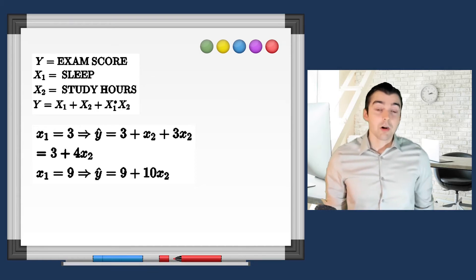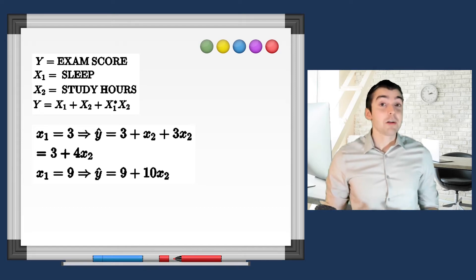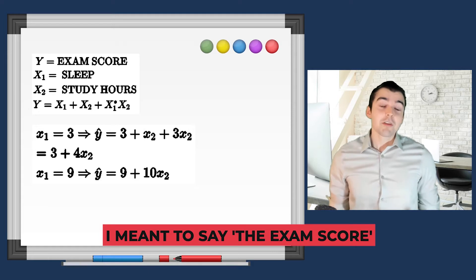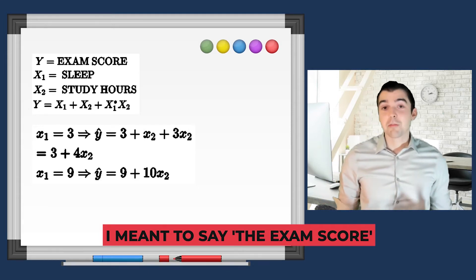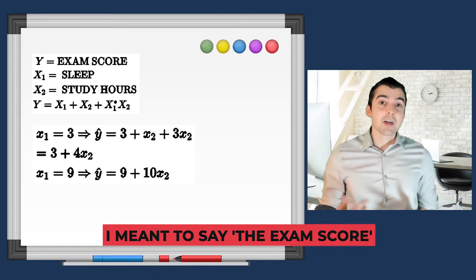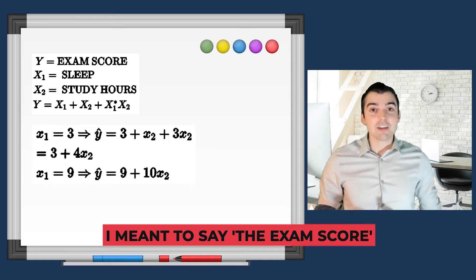Let's say that you are predicting whether or not you will pass an actuarial exam. The two variables that you're using are the amount of sleep that you've gotten the prior night and the amount of time that you've put into the current study session.